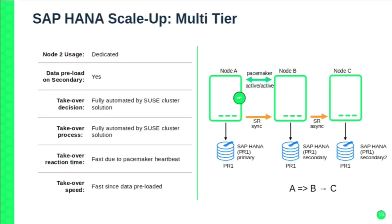The fourth scenario is multi-tier, which means a chain: node A replicates to node B, node B replicates to node C, and node C can be asynchronous replication allowing longer distances — maybe on the other side of the continent. But since it's asynchronous and not in the cluster, we can't manage that remote node. The cluster only covers nodes A and B. Node C is essentially a DR instance.